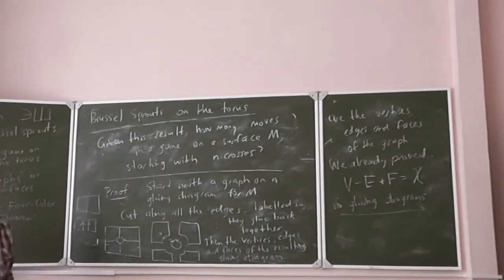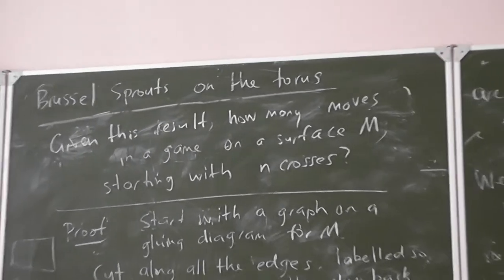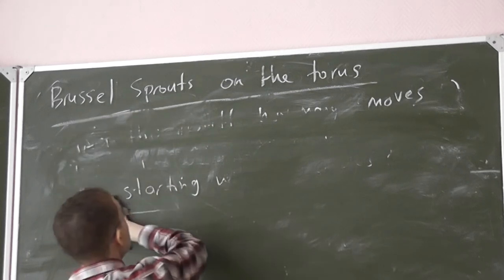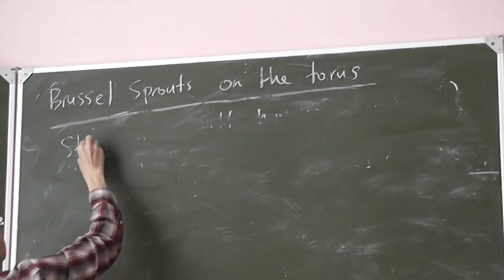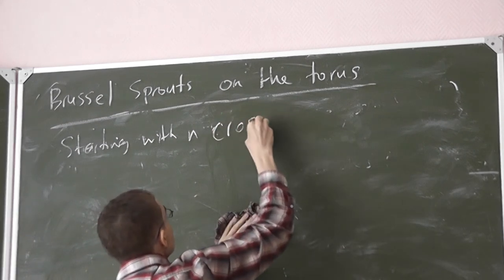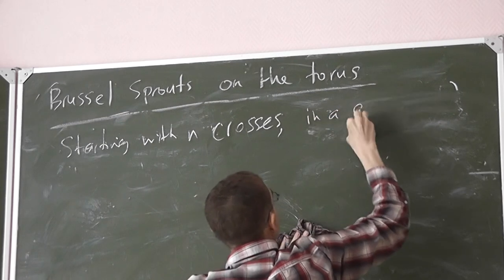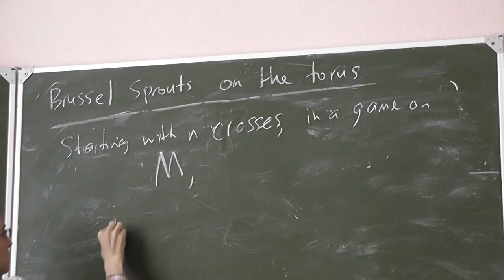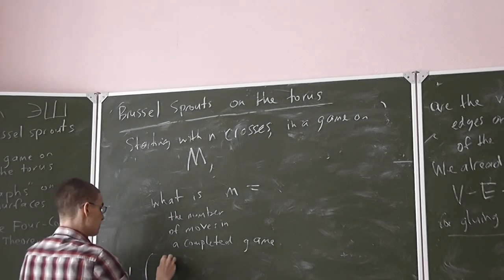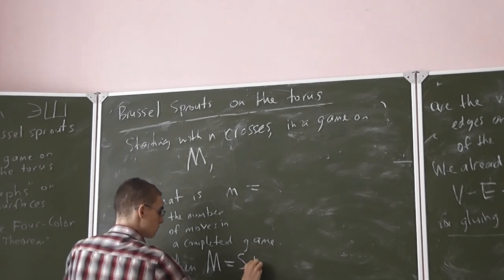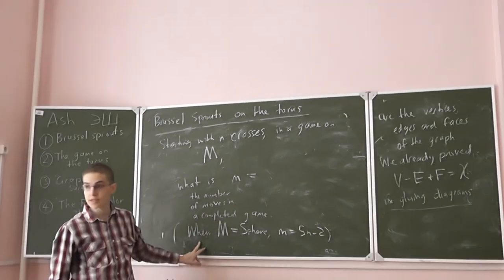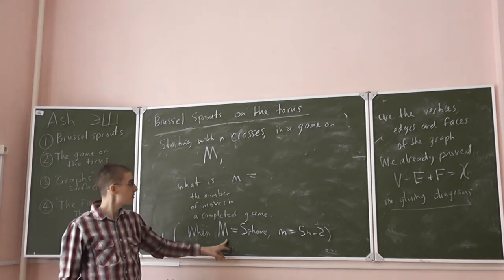So now we have this formula. We can return to the question of how many moves are there in a game of Brussels Sprouts on a torus, or any other surface. N crosses. In a game, what is the number of moves, what is M? Earlier we have for when M is a sphere, M is 5n minus 2. So my question is, what if you have another surface? Can we find that formula here? When the Euler characteristic was 2, we had 5n minus 2.